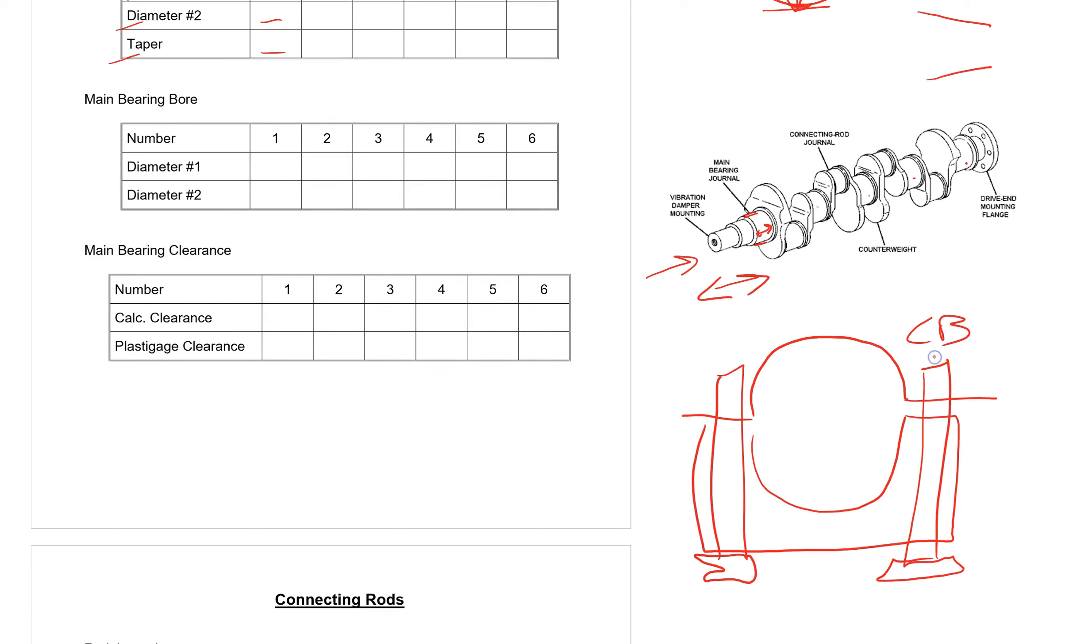And torqued to specifications. You put it on your torque specifications and then you're going to measure two places. You're going to measure across there and you're going to measure across there using a telescoping gauge. Two diameters. Diameter one, diameter two.